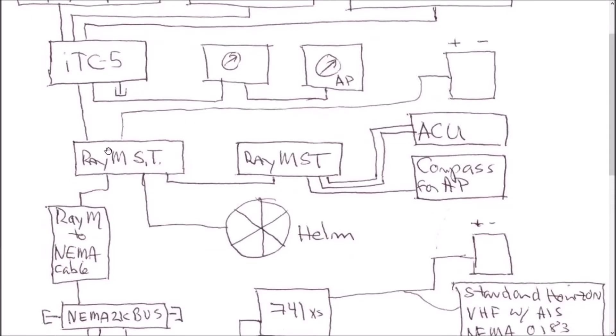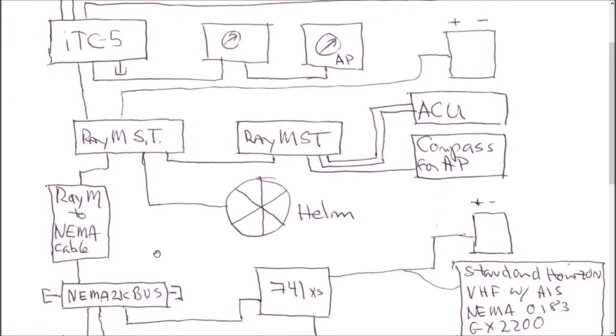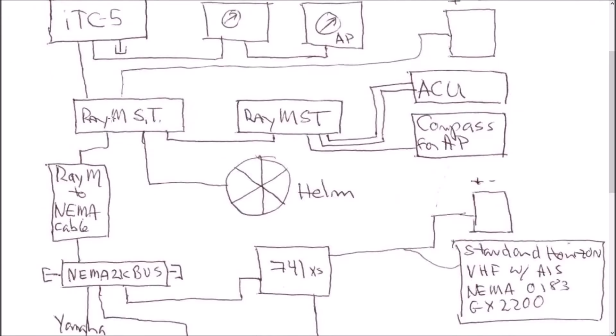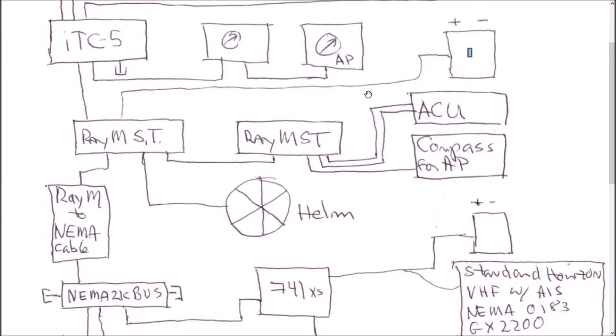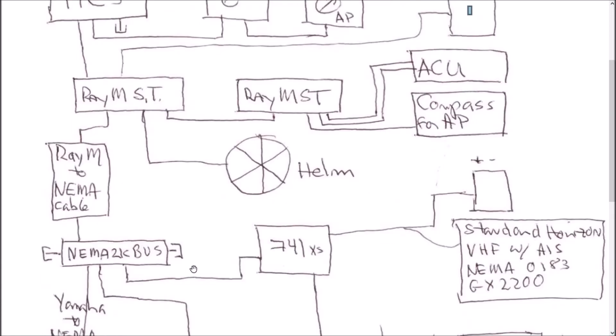So we go now from the Raymarine SeaTalk network to the NEMA 2000 standard network. And this is just a cable that changes the pinout from one to the other. There's nothing else to it. The Raymarine network also provides the power to the NEMA 2000 bus. You only want to have one power source. And this power source here powers the Raymarine network, which also powers the NEMA 2000 bus.